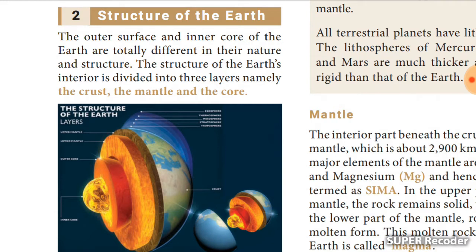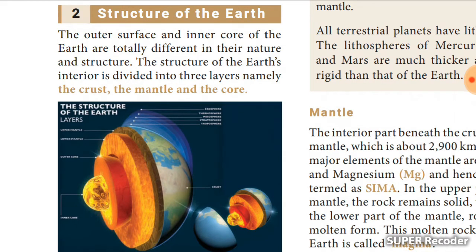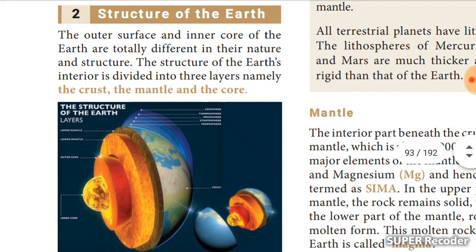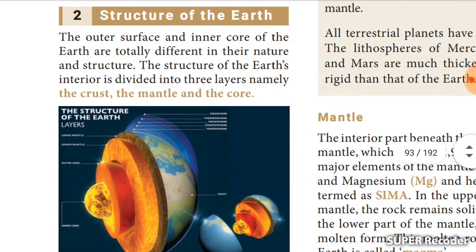Outside the earth we can see mountains, plateaus, plains, forests, and water, but inside it is something different. The structure of the earth's interior is divided into three layers: the crust, the mantle, and the core.